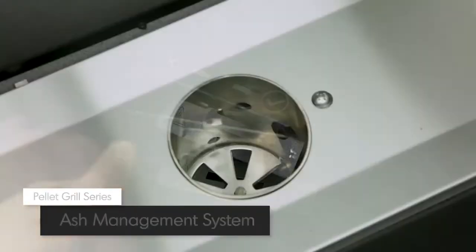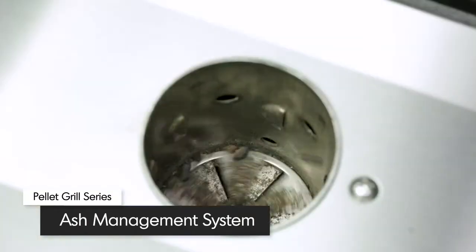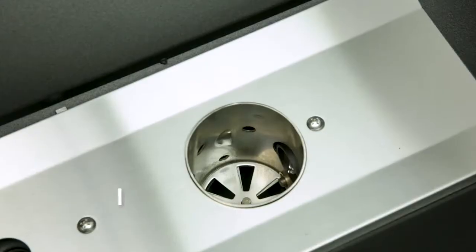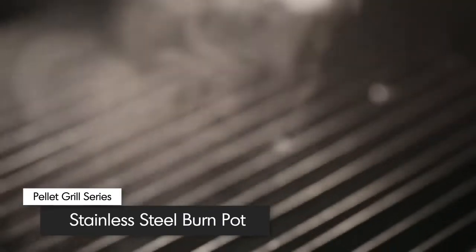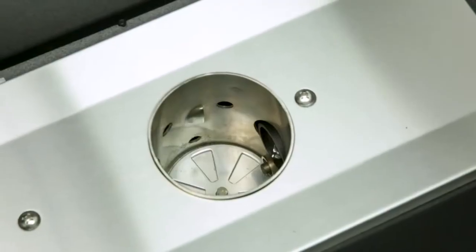Broil King's ash management system allows you to easily clear pellet ash from the burn pot. The ultra-thick stainless steel burn pot is built to take the heat, as your pellet grill sears at a scorching 600 degrees Fahrenheit.